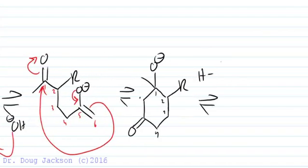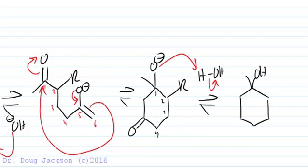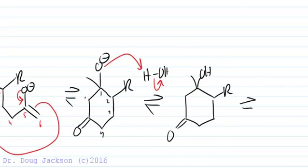We can protonate here and most of the time because of the system we're using, once we've got our alcohol here with everything in place, this continues on through an E1CB in basic conditions to eliminate that OH.